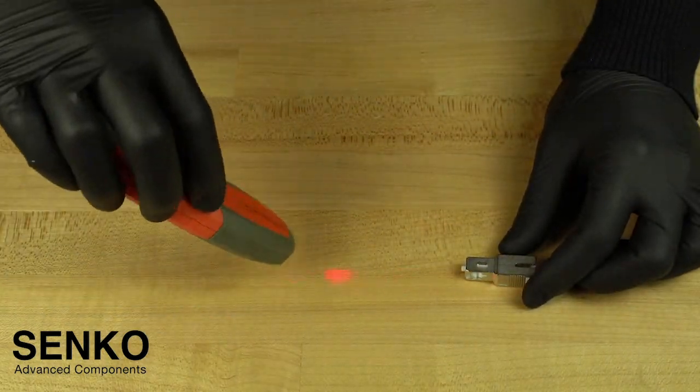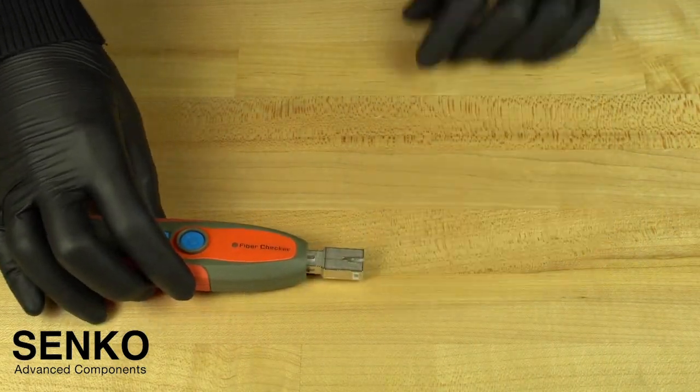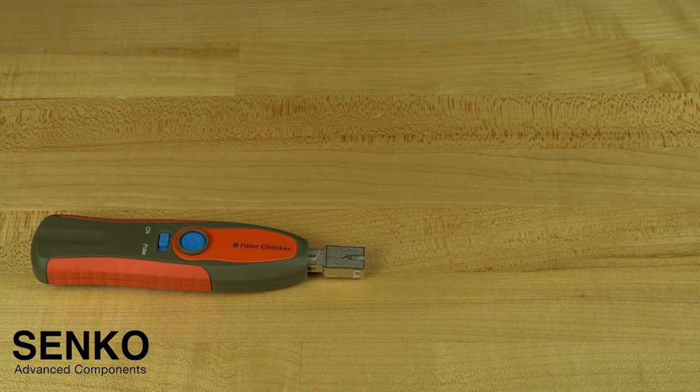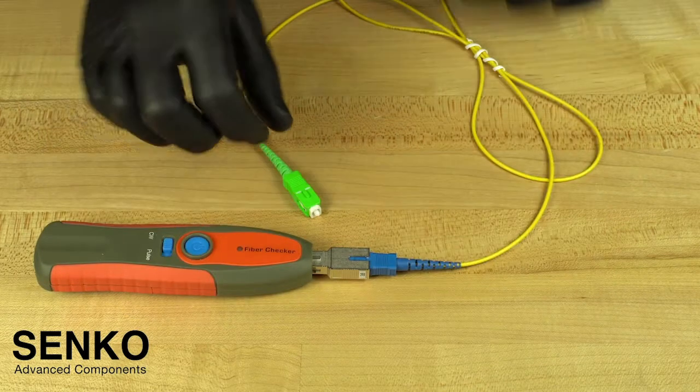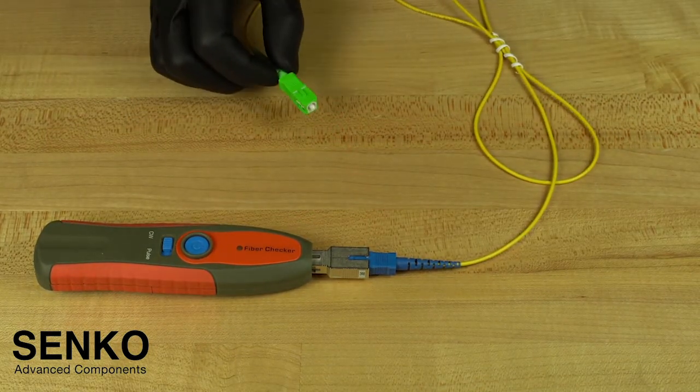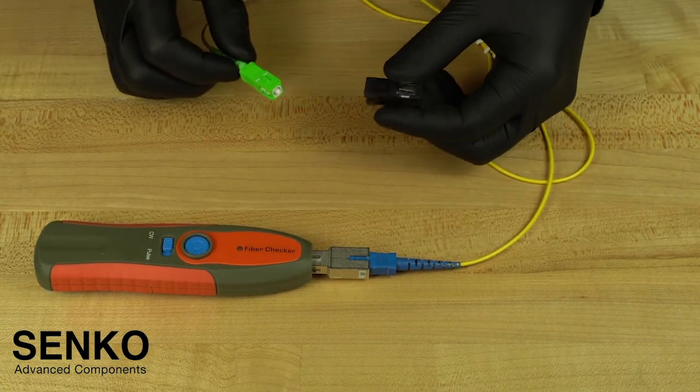First, plug the attenuator into the VFL. Then, plug the UPC end of the launch cable into that attenuator. Now, plug the other end of the launch cable into the SC-SC adapter.